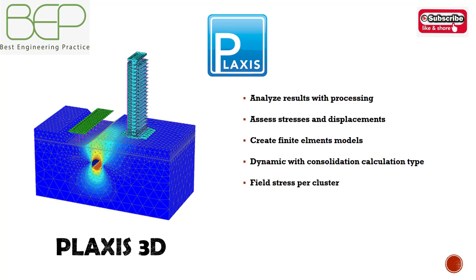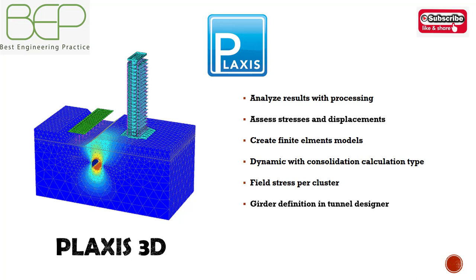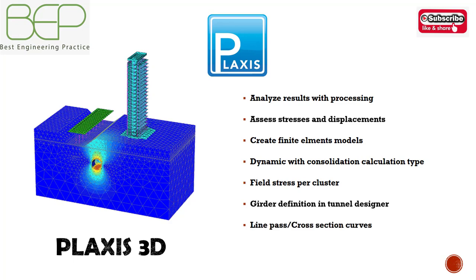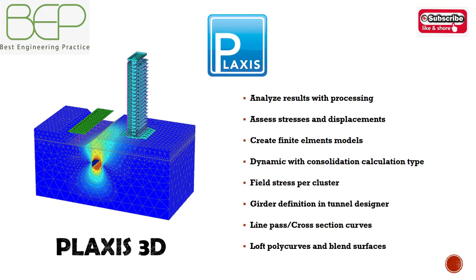PLAXIS 3D allows direct specification of in-situ stress conditions. Tunnels are often reinforced with transverse ribs, which can be modeled as beam elements at specific intervals in the 3D tunnel designer. Cross-sections can generate structural forces by capability. Both loft, polycurve, and blend surfaces can be used to provide smooth transitions between non-uniform regions and sections, and NURBS curves are used to model arbitrary shapes in 3D.